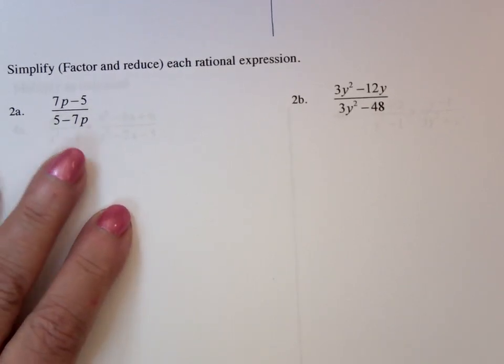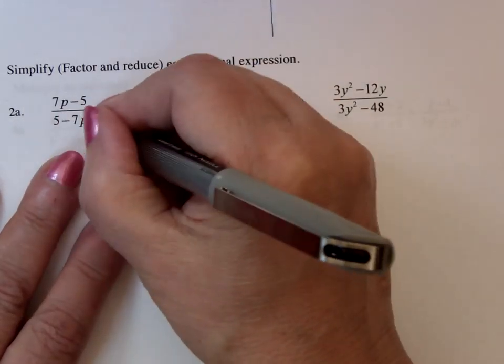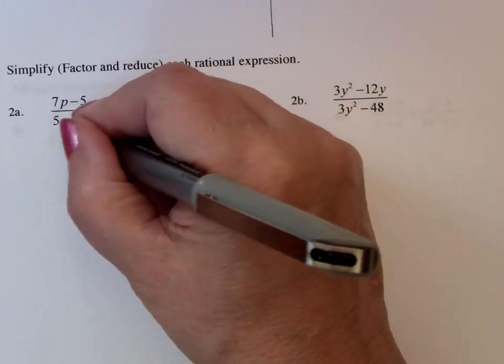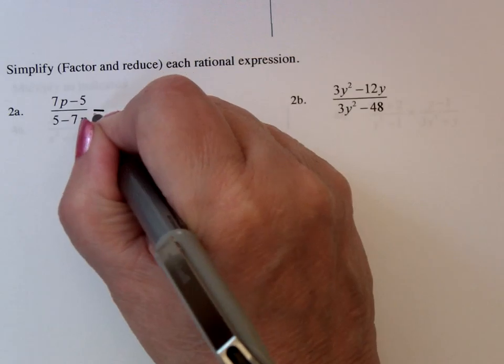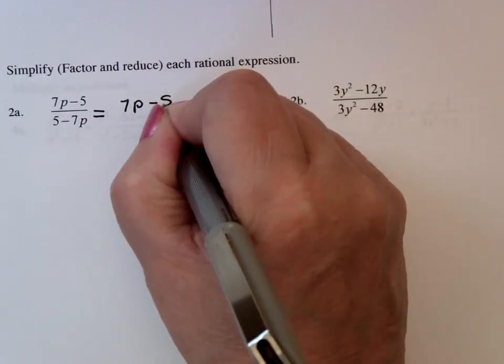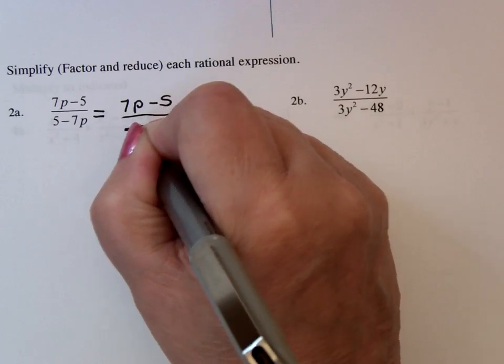I noticed that these two are the same except for one thing. It's got a factor of negative 1. What I like to do when I have something like this is write it in descending powers. Then you get an idea what you need to do.